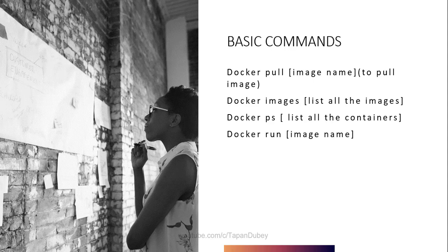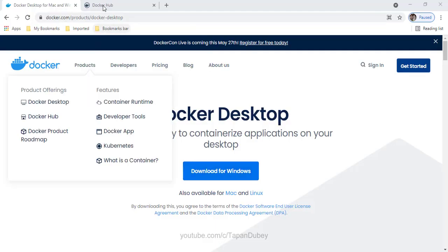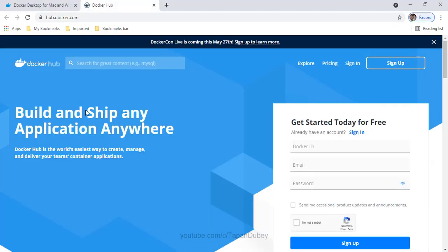We have another command, 'docker images', which gives you a list of all the images. Another command is 'docker ps', which lists all the containers. And another command is 'docker run' followed by the image name to run a container.